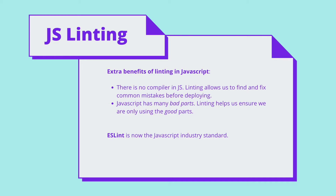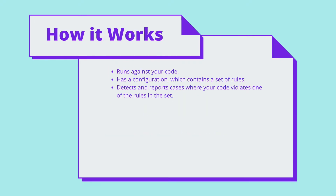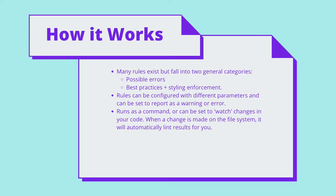While JSLint was the first linter, released in 2002, ESLint is now the JavaScript industry standard for linting. So how does linting work? Linting takes your code as an input and is configured with a set of rules. If an area of code breaks these rules, the linter will detect this and report these occurrences. Linting rules generally fall into two categories: possible errors and best practices, style, and so on. They can be configured with parameters and can be set to either warn you or report it as an error. When you run a linter, you can either run it as a command, or set it to watch changes in your code — meaning when a change is made on the file system, it will automatically lint and report the results to you.